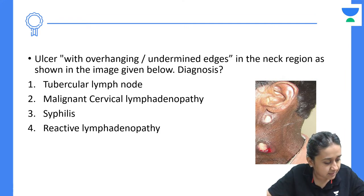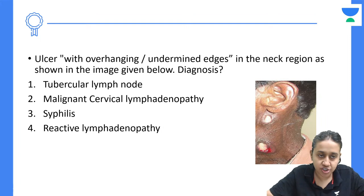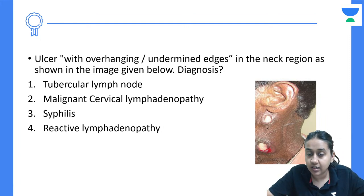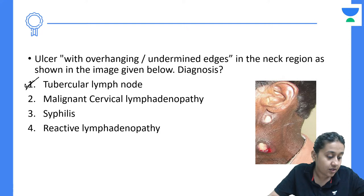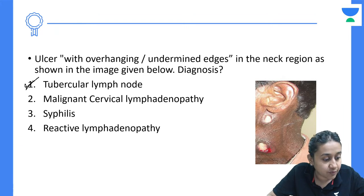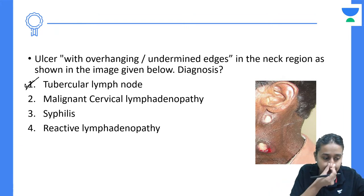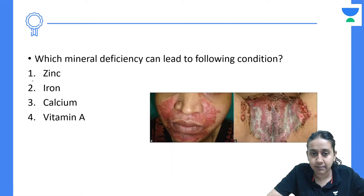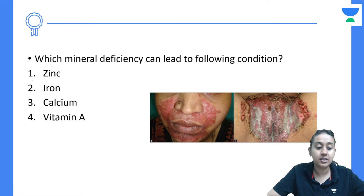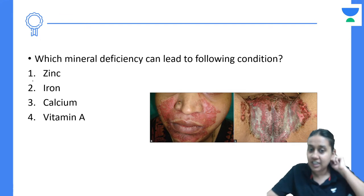With overhanging undermined edges in the neck region as shown — what is the diagnosis? It is a characteristic image of a tubercular lymph node secondarily infecting the skin, known as scrofuloderma or TB lymph nodes. In children the most common variety is scrofuloderma, while in adults the most common variety is lupus vulgaris.